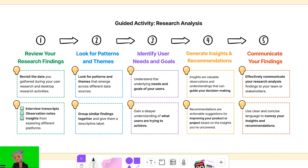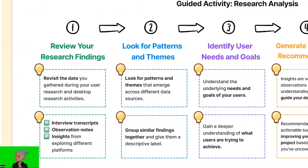Step one: review your research findings. Begin by revisiting the data you gathered during your user research and desktop research activities. This could include interview transcripts, observation notes, and insights from exploring different platforms. Take time to familiarize yourself with the information, looking at both your user research and desktop research. Step two: look for patterns and themes. As you review your findings, start looking for patterns and themes that emerge across different data sources. Are there recurring behaviors, preferences, or challenges that users commonly mentioned? Group similar findings together and give them a descriptive label.